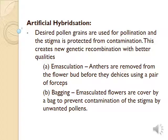Artificial hybridization is used in crop improvement programs. Here, desired pollen grains are used for pollination. This hybridization creates new genetic recombination with better qualities. It is done by emasculation and bagging techniques. In emasculation, anthers are removed from flowers before dehiscence using a pair of forceps. Emasculated flowers are covered by butter paper to prevent the stigma from unwanted pollen — this is called bagging. Then, desirable pollen collected from another male parent is dusted on the stigma, and flowers are re-bagged. Fruits are then allowed to develop. These techniques are used only in bisexual flowers.